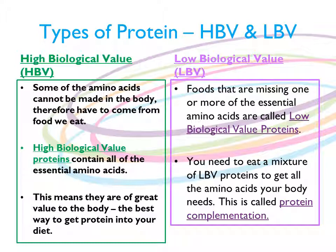Foods that are missing one or more of the essential amino acids are called low biological value proteins. You should eat a mixture of LBV proteins to get all the amino acids your body needs. This is called protein complementation.